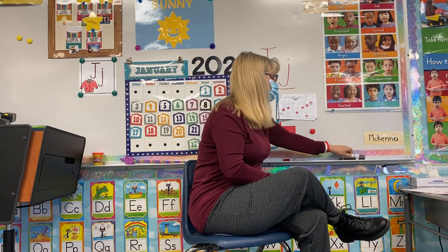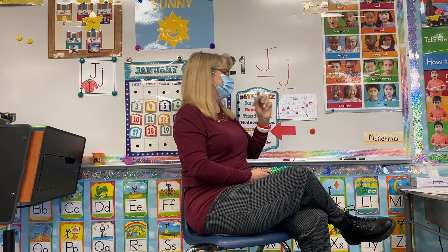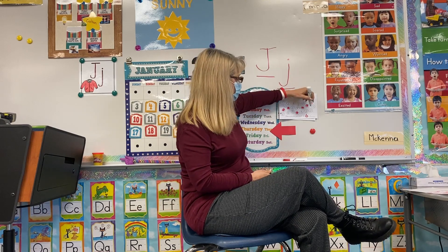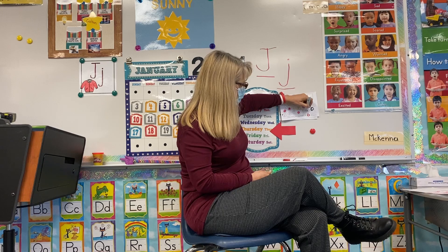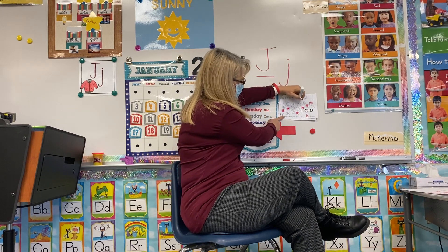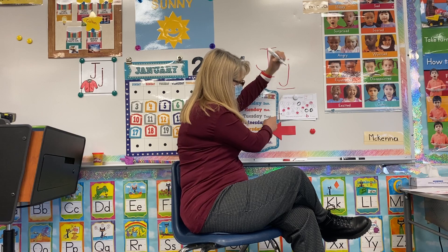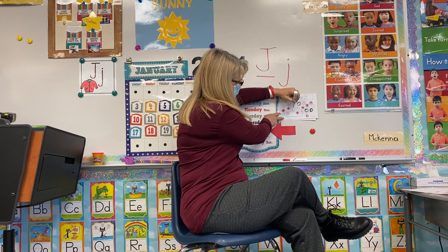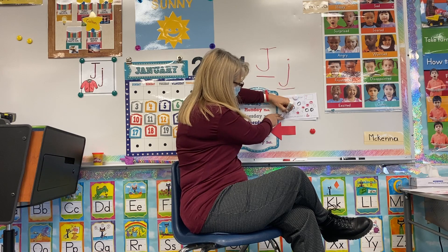Then I will circle the lowercase j's in black, a different color. So then it's going to be one there, there. Do you guys see any other ones? I see one right there. Let's find some more. There's another one, and another one. Oops, here's one hiding down here.